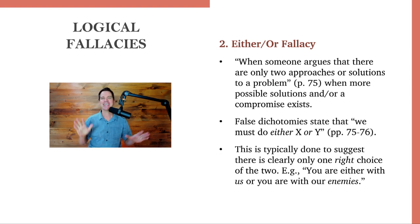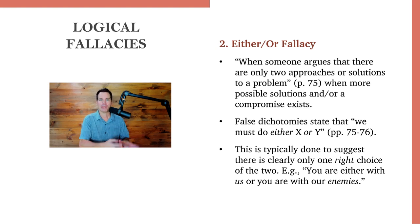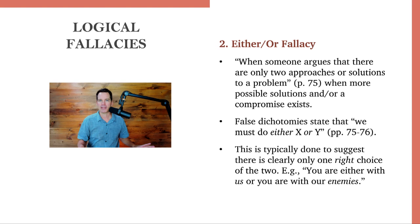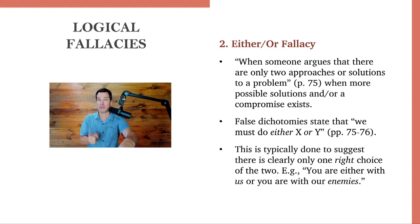Number two: the either/or fallacy — this is a big one. Sometimes people argue that there are only two possible approaches or solutions to a problem when more than one exists, or possibly a middle ground. This is called a false dichotomy, stating you either have to do X or Y. That's rarely the case, and usually when people say that, they're trying to get you to pick the obvious solution they want. A former president once said, 'You're either with us or you're with our enemies,' implying you must stand behind everything they say or you're automatically against them. But what if you see a little of both sides, want a middle ground, or agree but also see problems in the solution? There are lots of other options on the table, but the either/or fallacy tries to force you into choice A or B.